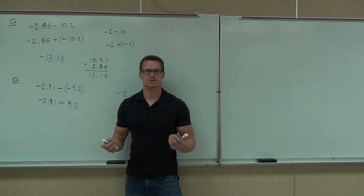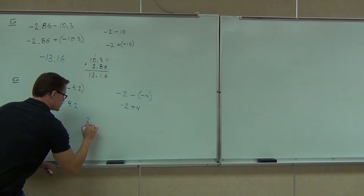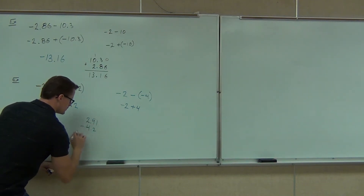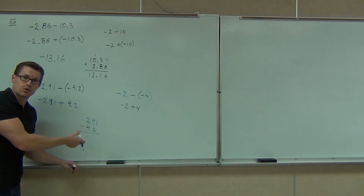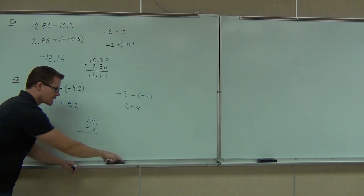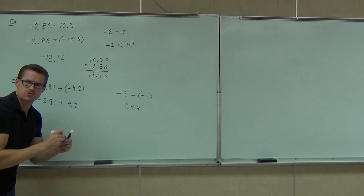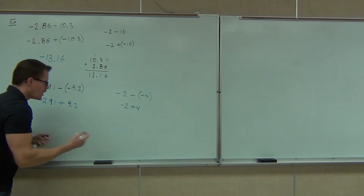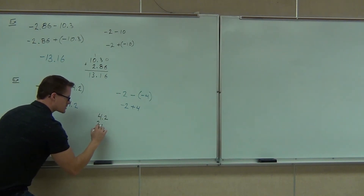Now, when you subtract — Carmelo, this is going to answer your question — when you subtract them, you can't do 2.91 minus 4.2. You can't do it. You have nothing to subtract here. It's not going to work. So when we say subtract, you're subtracting like you normally would. Just like you did over here — you did 4 minus 2, that's how you got the 2. Over here, you're going to take 4.2 minus 2.91.